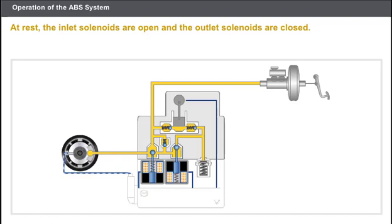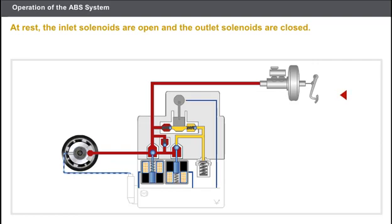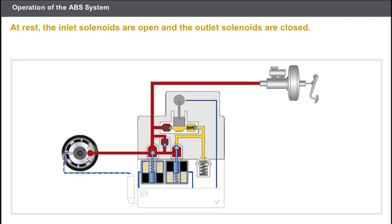Now let's look at braking without regulation. In the case of braking without regulation, the ABS unit does not intervene. The braking pressure is created via the hydraulic unit. At rest, the inlet solenoids are open and the outlet solenoids are closed. The increase in pressure takes place inside the circuit and builds up uniformly.